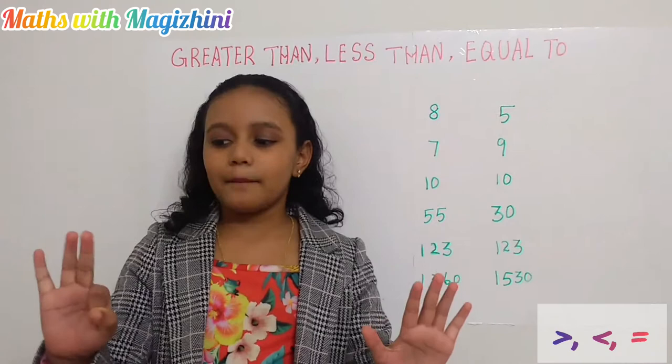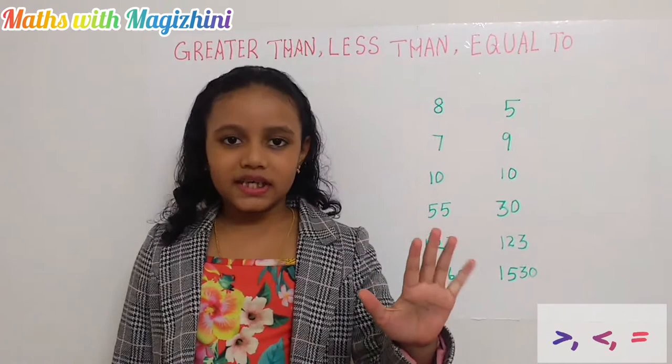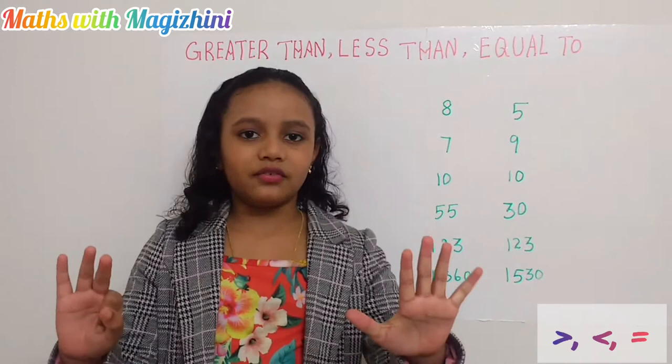So let's say I have 5 apples on this hand and 3 apples on this hand. That represents 5 is greater than 3, or 3 is less than 5.